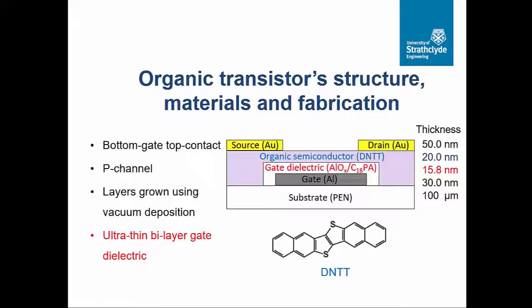So, here we have the structure of the transistors that we used in this research. It's a bottom gate, top contact, P-channel device. Layers are grown using vacuum deposition. We have the plastic substrate, which is about 100 micrometers in thickness. The gate is aluminum. We have a bilayer of aluminum oxide and phosphonic acid. Then, as I mentioned, DNTT is the organic semiconductor. And the source and drain electrodes are made from gold. Here we have the thicknesses.